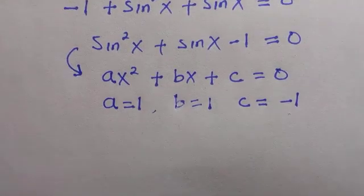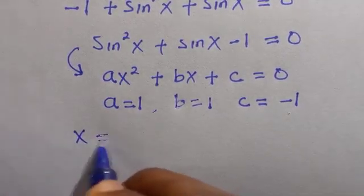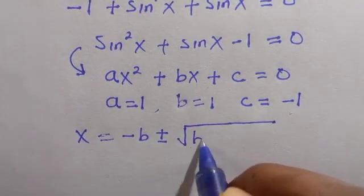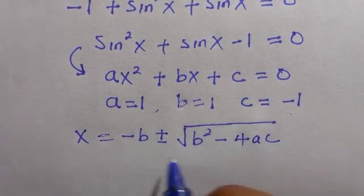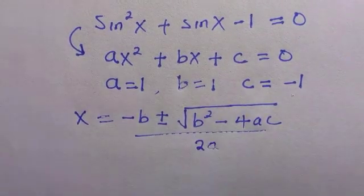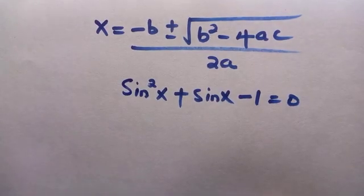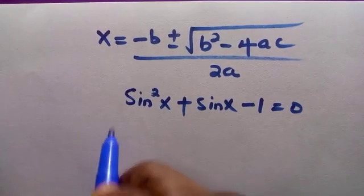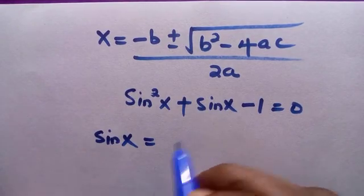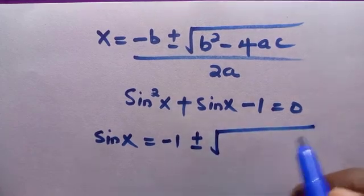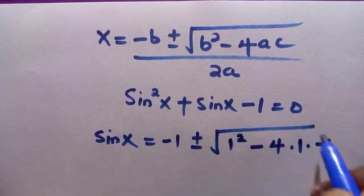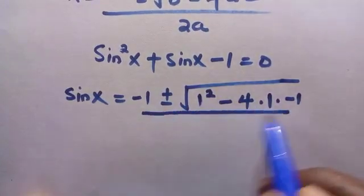Recalling the quadratic formula: x equals negative b plus or minus the square root of b squared minus 4ac, all divided by 2a. Substituting our values — a equals 1, b equals 1, c equals negative 1 — we get sin X equals negative 1 plus or minus the square root of 1 raised to the power 2, minus 4 times 1 times negative 1, all divided by 2 times 1.